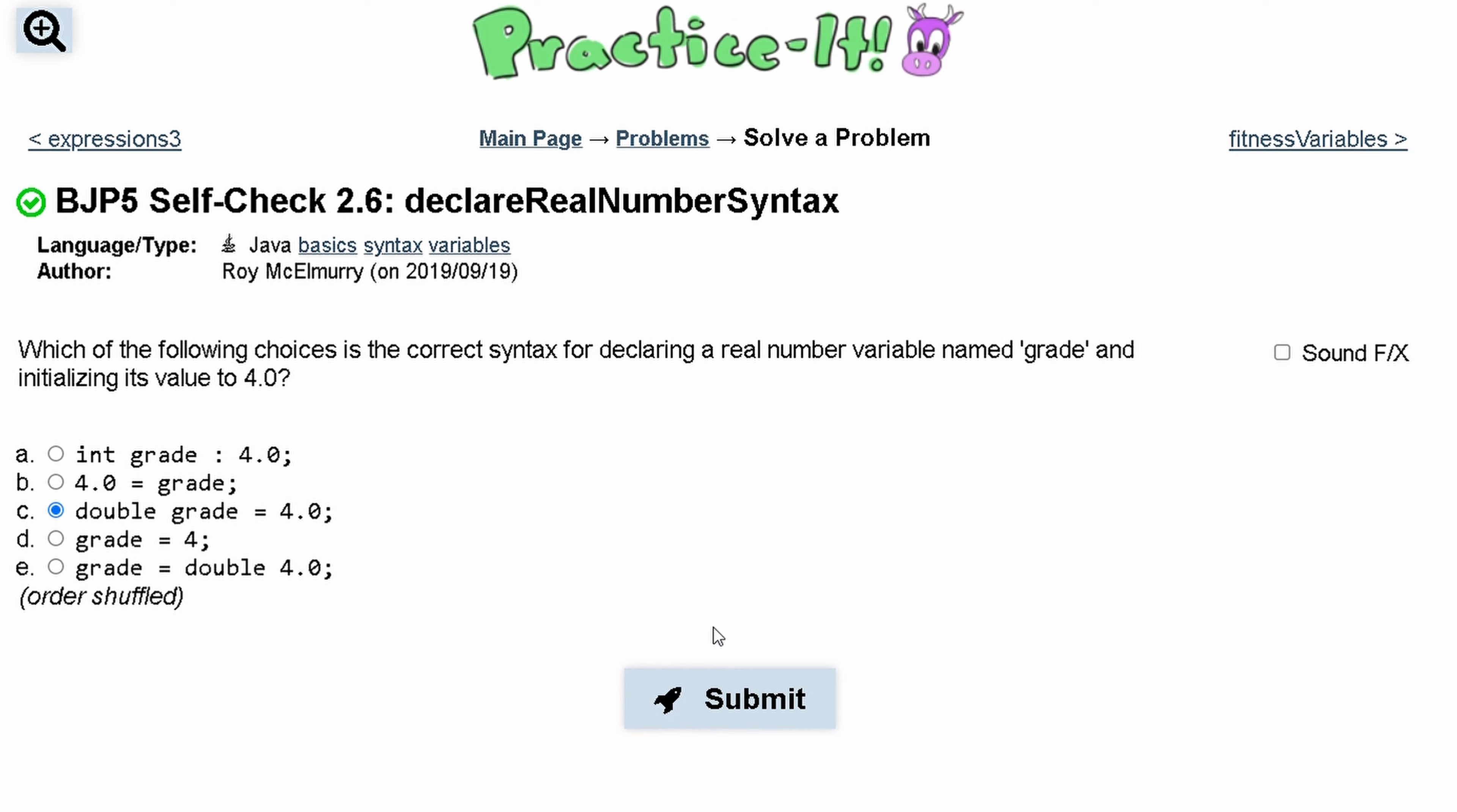For practice itself check 2.6, declare real number syntax, we are asked which of the following choices is the correct syntax for declaring a real number named grade and initializing its value to 4.0.